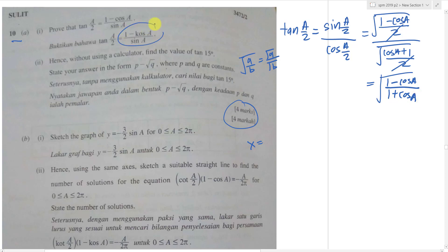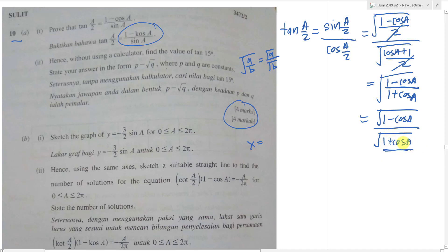My objective is to get (1 − cos a)/sin a. To get sin a at the denominator, I note that separating gives √(1 − cos a) over √(1 + cos a). I want the bottom to become sin²a. So I'll multiply both top and bottom by √(1 − cos a).